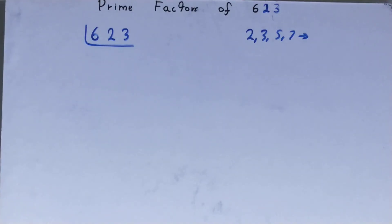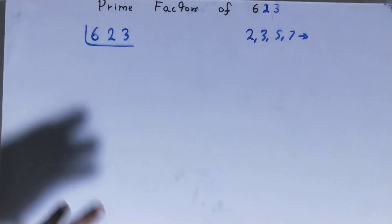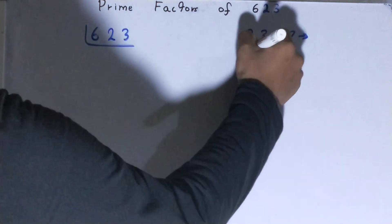We'll be starting with the lowest prime number we have, that is 2. Is the number 623 divisible by 2? The answer is no, it is an odd number. So what we'll do, we'll go to the next lowest prime number we have, that is 3.